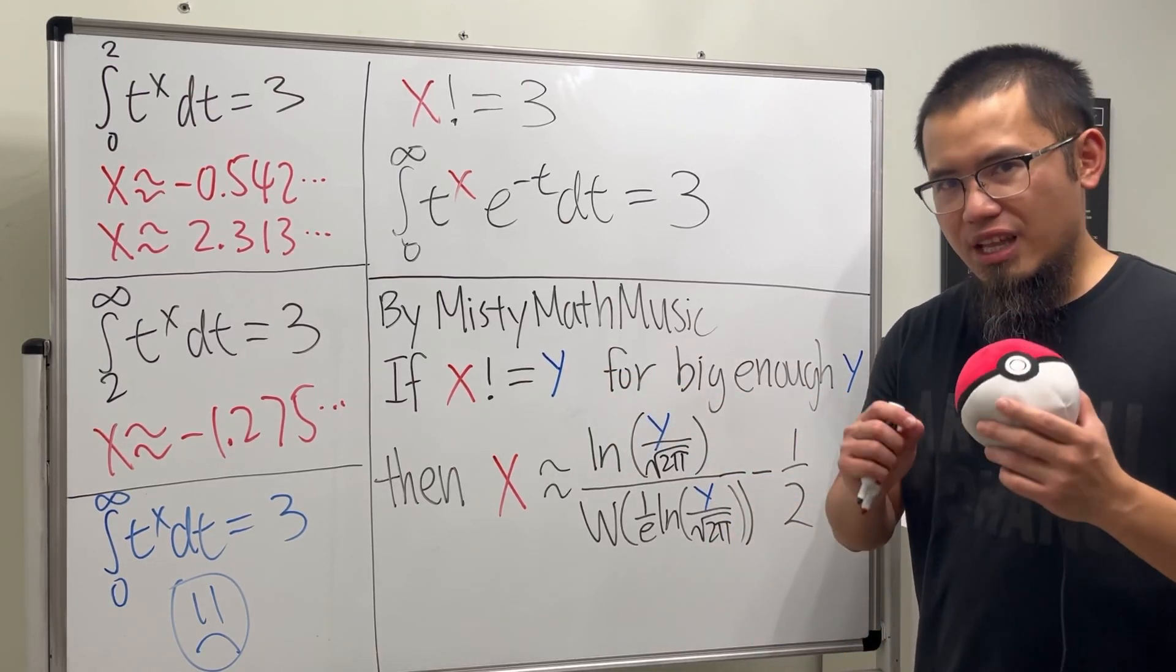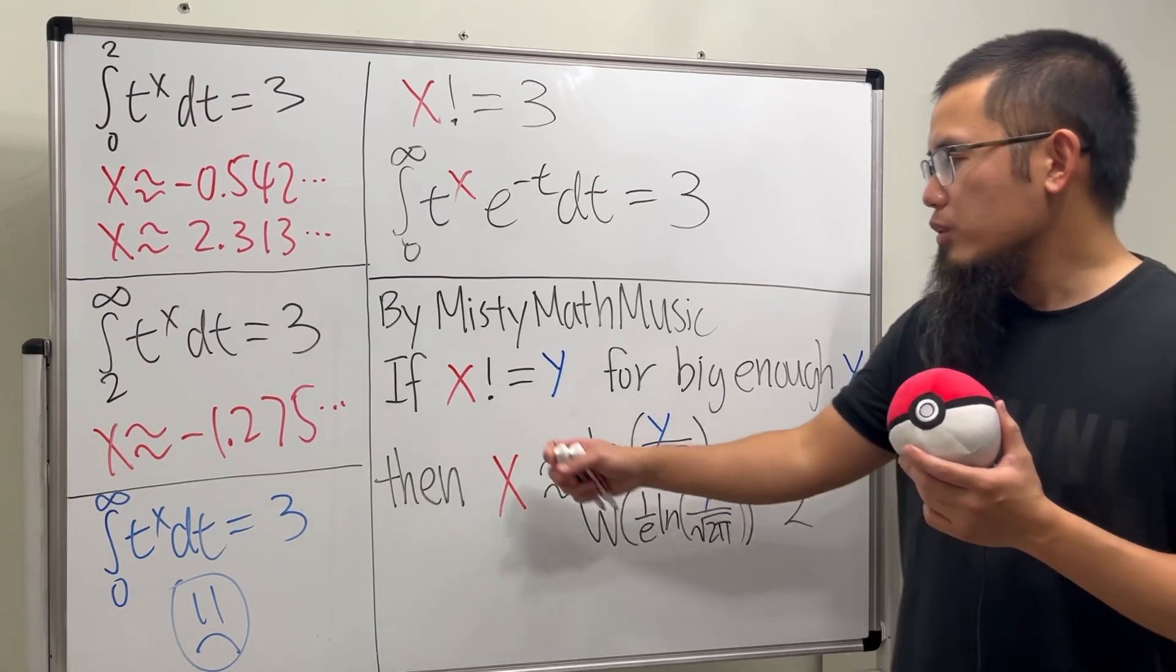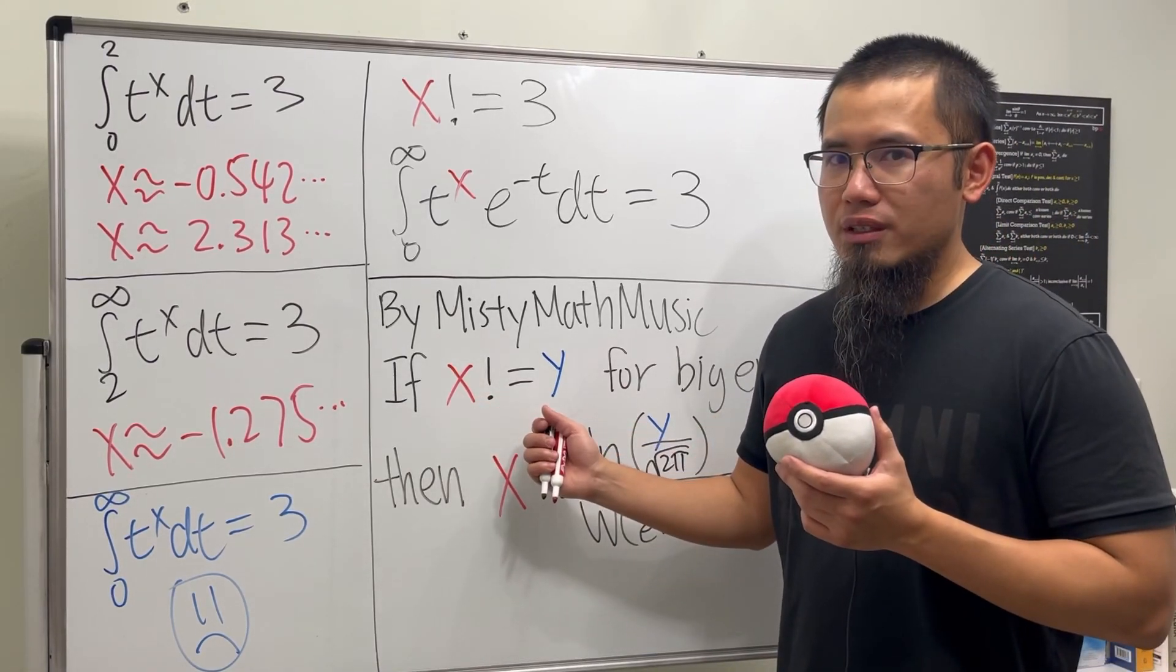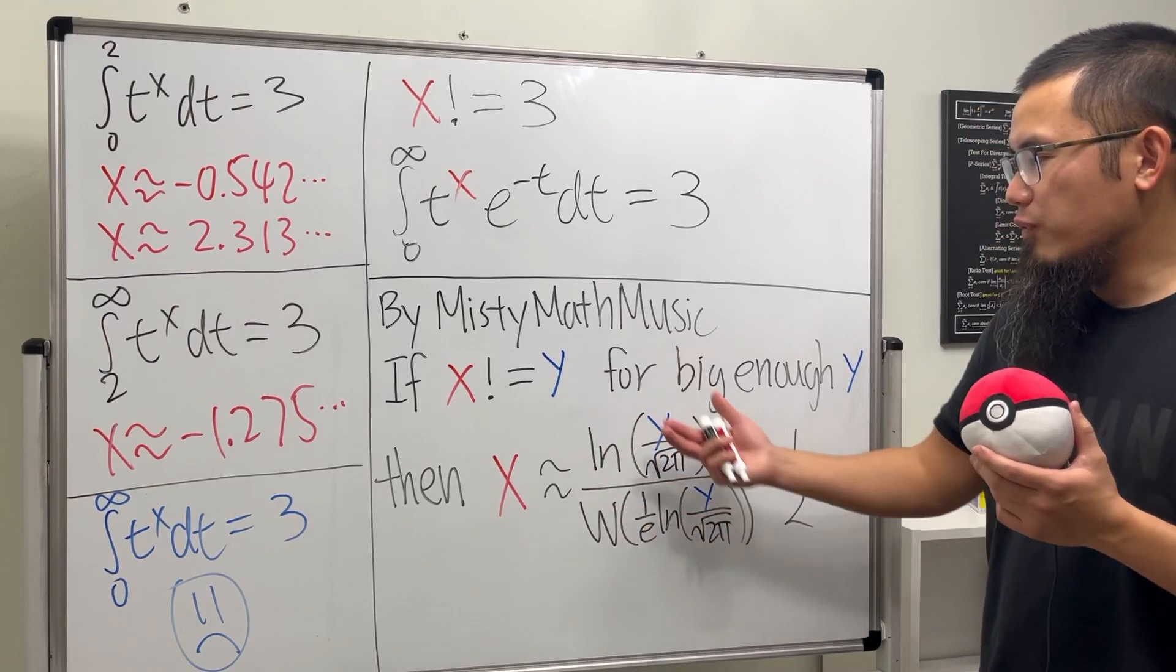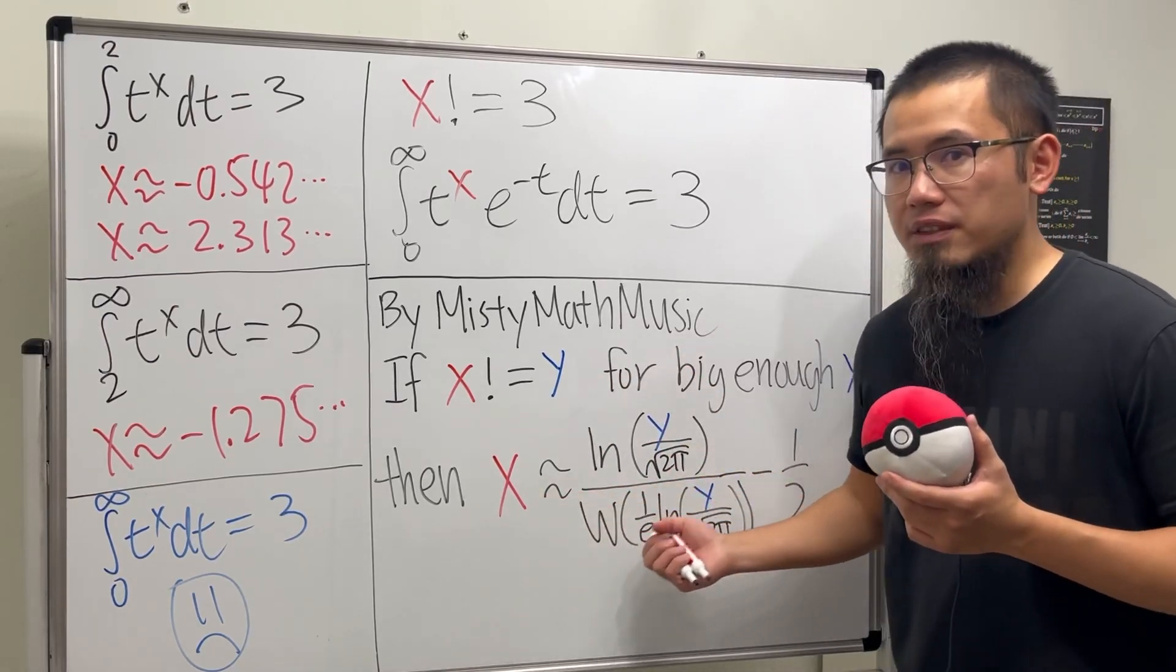In his video he used 100 for y and the answer that he got was very very good. Now the question is that if we want to solve a factorial equation, yes we can use this if y is big enough and we can get a positive answer for that.